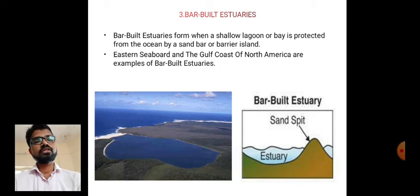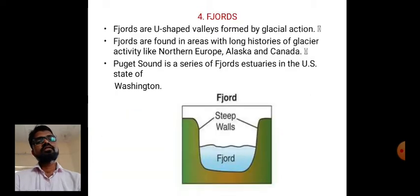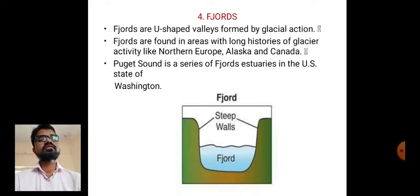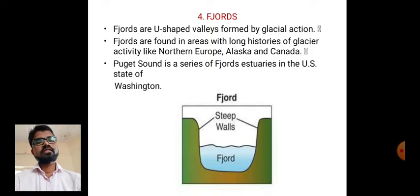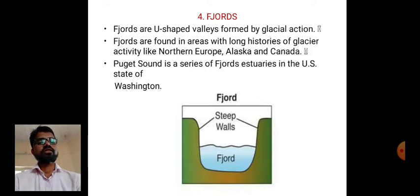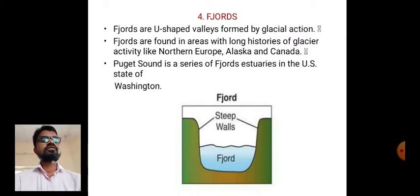The fourth type is fjords — U-shaped valleys, which may be an MCQ question. Fjords are U-shaped valleys formed by glacial action. They are found in areas with long histories of glacier activity, such as northern Europe, Alaska, and Canada. Puget Sound is a series of fjords in the US state of Washington. The U-shape is due to the steep walls on the sides of the fjord valleys.